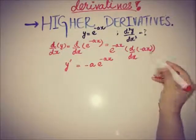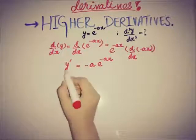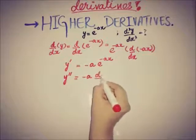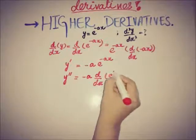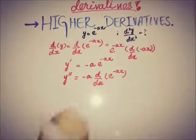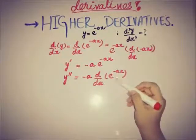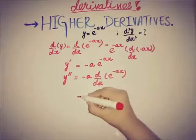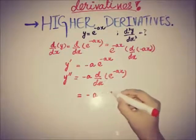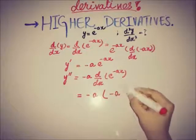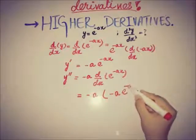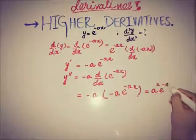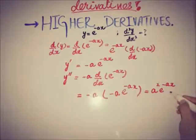The second derivative equals −a · d/dx of e^(−ax). Since d/dx of e^(−ax) is the first derivative we already found, we substitute: −a · (−a e^(−ax)). This gives a² e^(−ax), which is the second derivative.